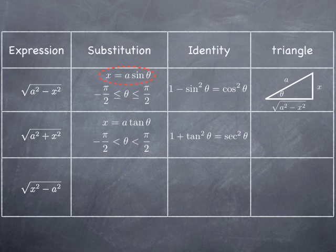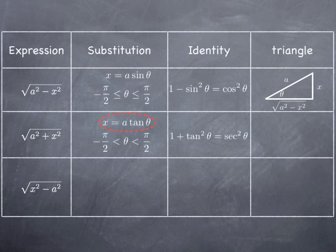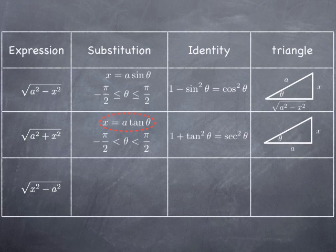So a squared plus x squared becomes a squared plus a squared tangent squared theta. Factoring out a squared, you get root of a squared times 1 plus tangent squared, so that's root of a squared secant squared theta. If x is a tangent theta, you can picture that in a triangle: the tangent is x over a, which is sine over cosine, or the opposite side over the adjacent side. So the ratio of opposite to adjacent is x to a, and using the Pythagorean theorem the hypotenuse is the root of a squared plus x squared.